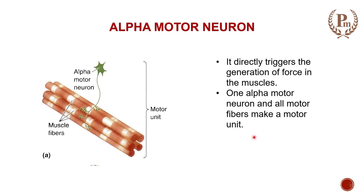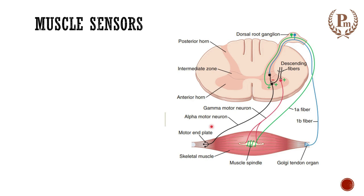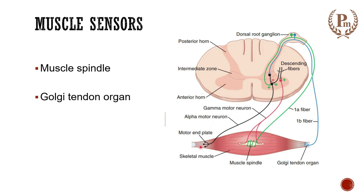The main muscle sensors are the muscle spindle and the Golgi tendon organ. Muscle spindles are lodged inside the muscle belly and are stretch receptors — they sense the change in the length of the muscle fiber. Golgi tendon organs are located in the tendons and sense the tension developed in the muscle. We will go into detail about the anatomy, connections, and function of each.